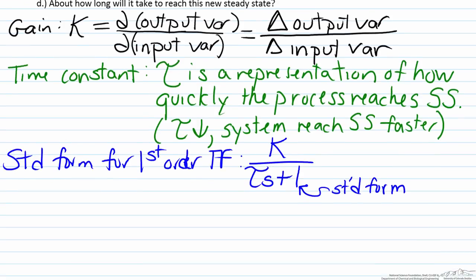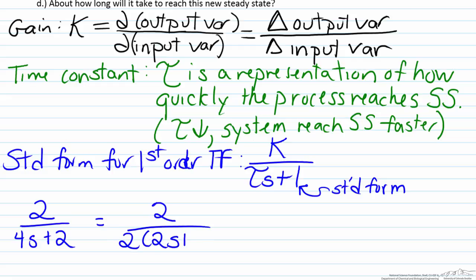So to do this, what we are going to have to do is just factor out the 2 that is in the constant. So what is going to happen here is 2 over 4s plus 2 is going to become 2 divided by, if we factor out the 2, 2s plus 1. And this will equal 1 over 2s plus 1.